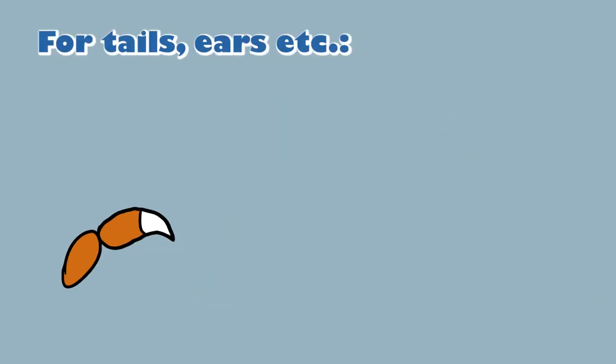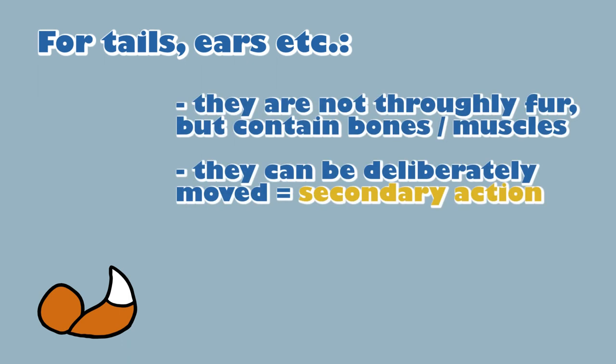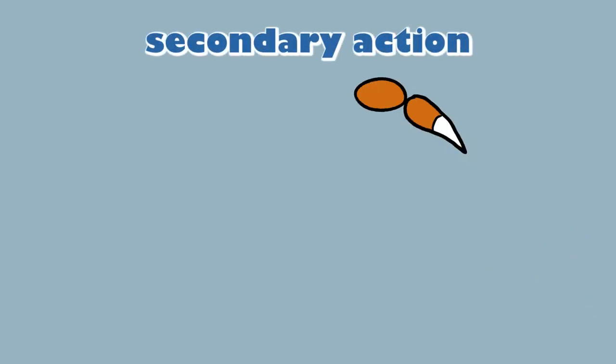And if a loose part isn't cloth but a part that a being can deliberately move, you could always sprinkle in some little active secondary action like these little tail wiggles in the beginning and the end for that extra sprinkle of life.